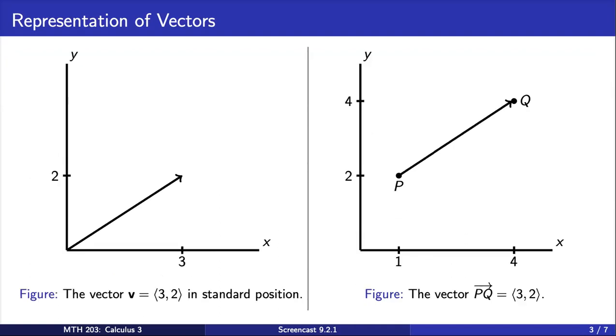Let's look at some ways to represent vectors. On the left graph, we have the vector which represents a horizontal change of 3 units and a vertical change of 2 units. We say that the x component of this vector is 3, and the y component is 2.